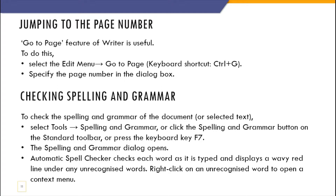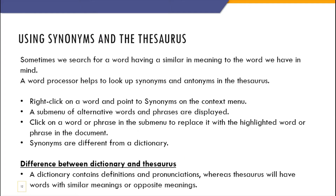Checking spelling and grammar: go to the Tools menu and select Spelling and Grammar. A dialog box will appear and you can enable the automatic spell checker, which will highlight words where you are making mistakes. Alternatively, press F7 to open spelling and grammar directly.